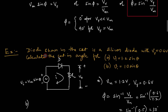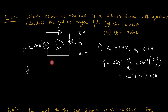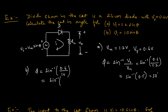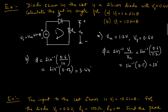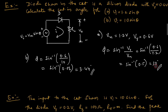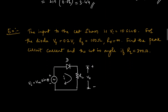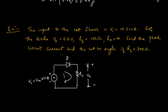For the second sub-question, the peak is increased — now V_i = 10·sinθ, so Vm = 10V. Applying the same formula: phi = sin⁻¹(0.6 / 10) = sin⁻¹(0.06) = 3.44 degrees. So when the peak voltage is higher, the cutting angle is much smaller.